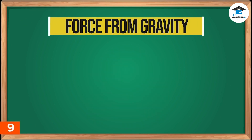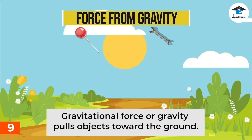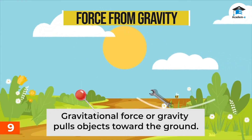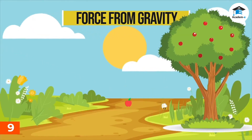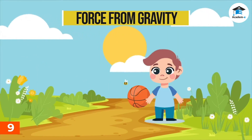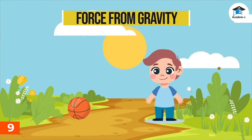Force from gravity. "What goes up must come down" — this saying refers to the force that pulls everything downward to Earth. Earth exerts a force on objects. Gravitational force, or gravity, pulls objects toward the ground. Gravity pulls fruits from a tree to fall to the ground, and a ball tossed upward comes down. All these happen because of the force of gravity.